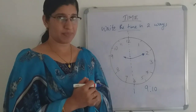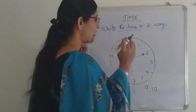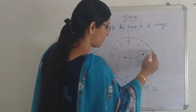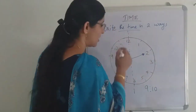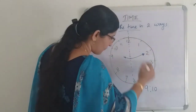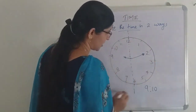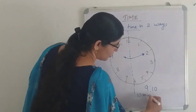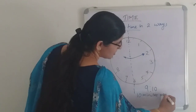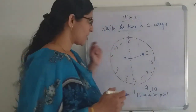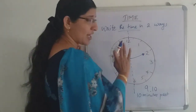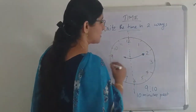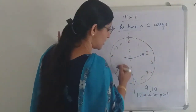This time can be said in another method. Whenever the minute hand is in the first half — from twelve to six — we say the minutes first using the word 'past.' So ten minutes past — that is the minute — and we only need to look at the minute hand when it is in the first half, from twelve to six.